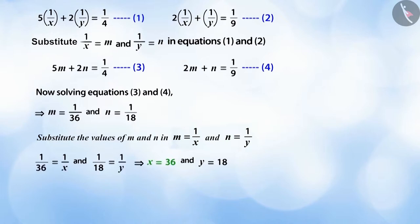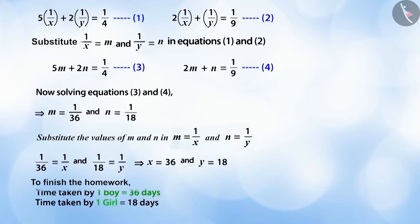We get x is equal to 36 and y is equal to 18. Therefore, to finish the homework, one boy will take 36 days and one girl will take 18 days.